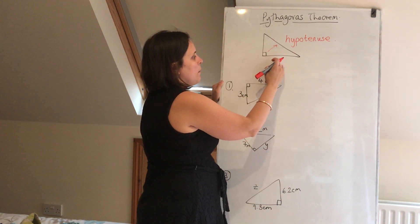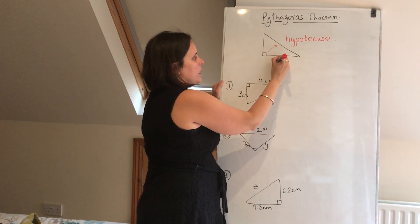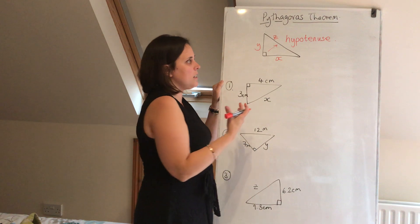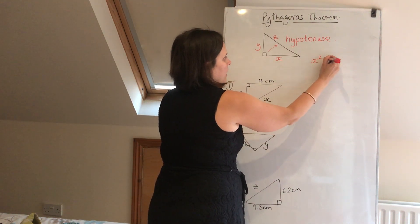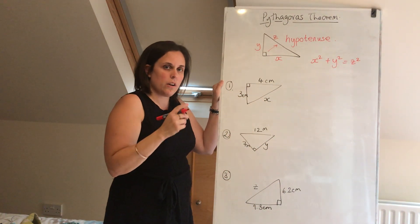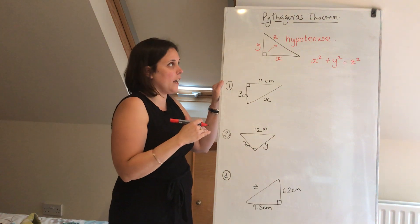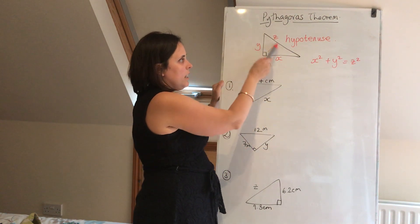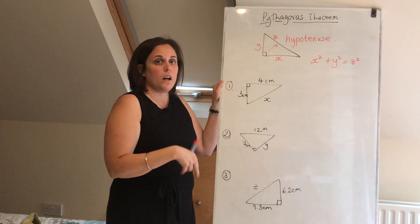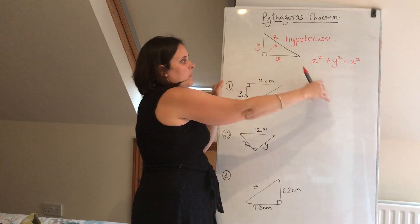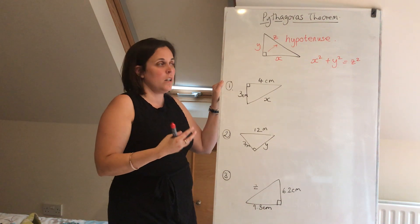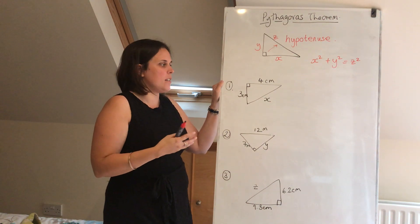Now that all sounds very complicated, but actually, all it means is this. If I was to call this side x, this side y, and this side z, then what I would be able to say is that x squared plus y squared is equal to z squared. So let me just repeat the theorem for you again. The square of the hypotenuse, z squared, is equal to the sum, that means we add them together, of the squares of the other two sides. So the square of x and the square of y added together. And that's all it is.